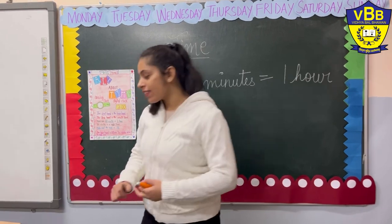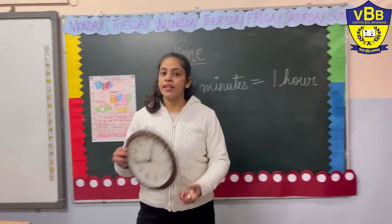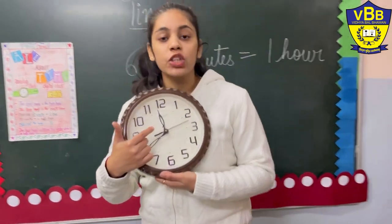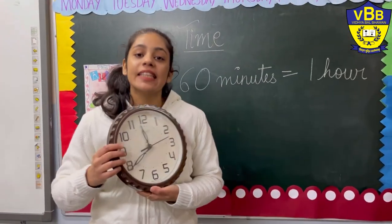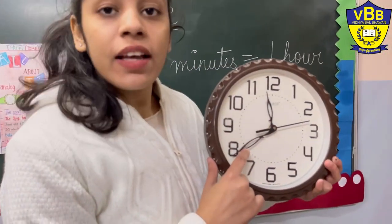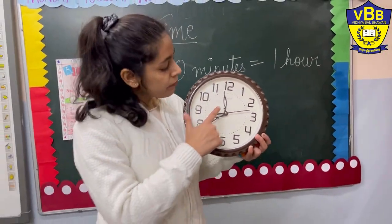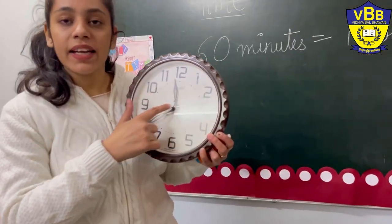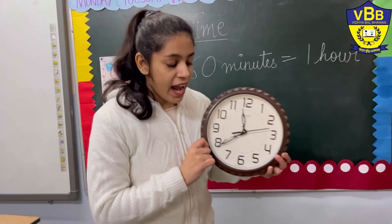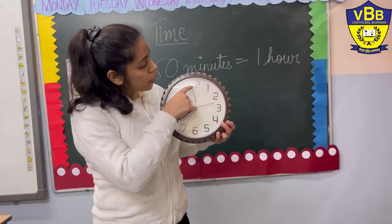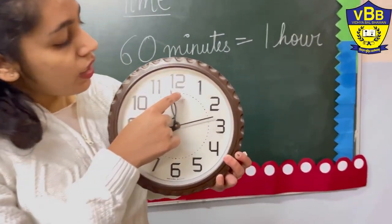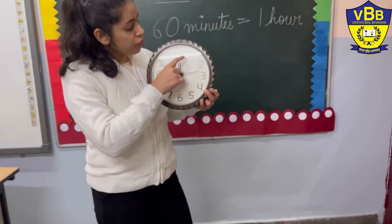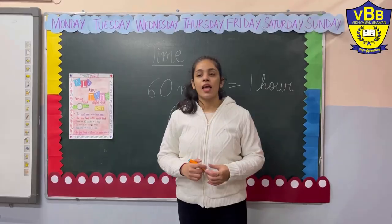I have another watch for you with some details. In this watch there are 3 hands: the longer one is the minute hand, the shorter one is the hour hand, and this thin hand is the second hand. And between two numbers, there are 5 dots representing minutes — 5 dots for each gap between numbers.